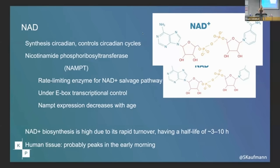Every study on circadian rhythms is done in rodents, and rodents are nocturnal. So it's incredibly hard to find human evidence because it says 'mammalian evidence' everywhere, and you have to ask: is that human or rat? Some things you have to really tease out because it's backwards sometimes. We think that NAD levels are highest in the morning in humans — the opposite of rats — so if you're going to take your NAD every day, take it in the morning because that's when your body needs it.